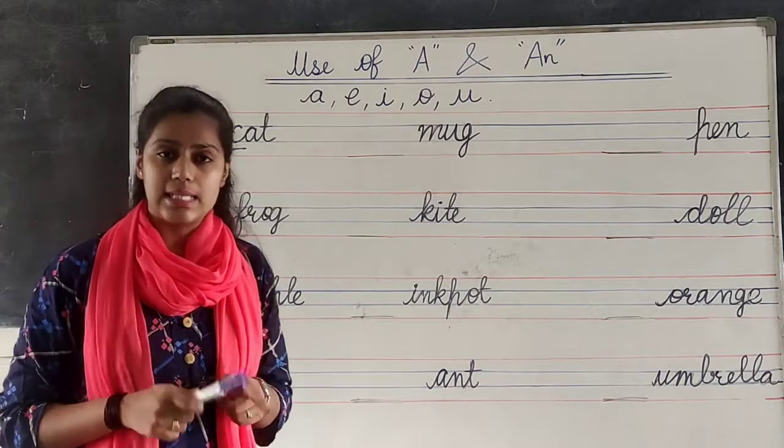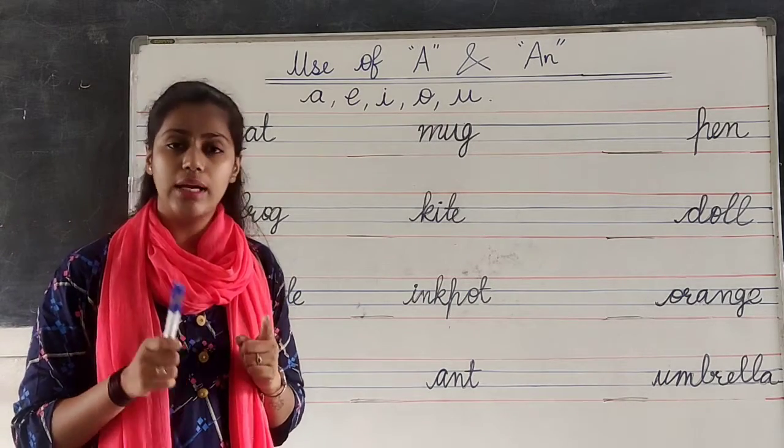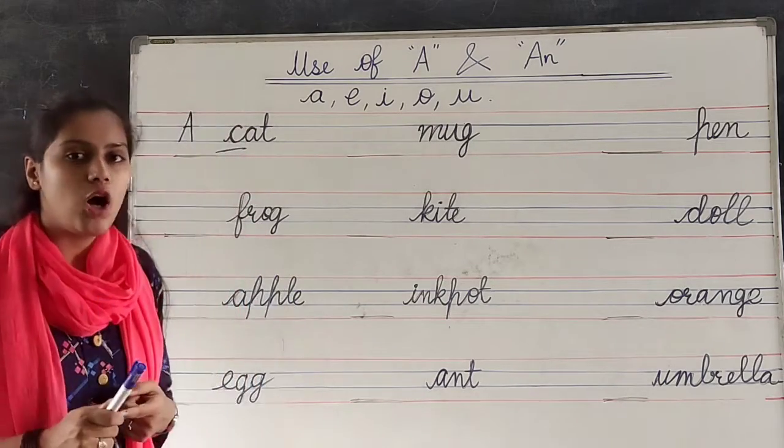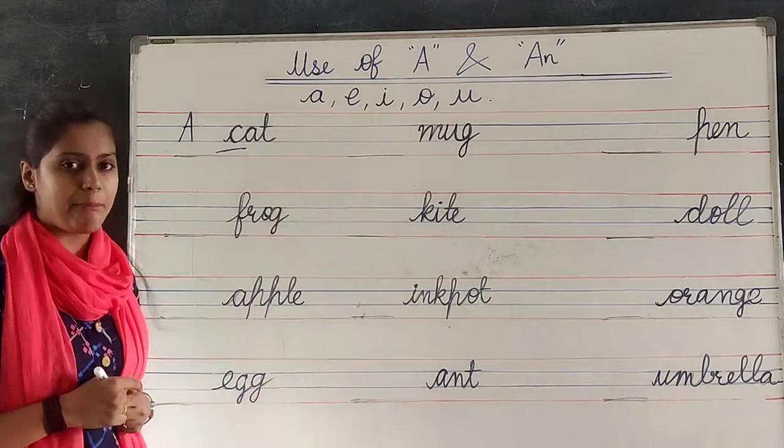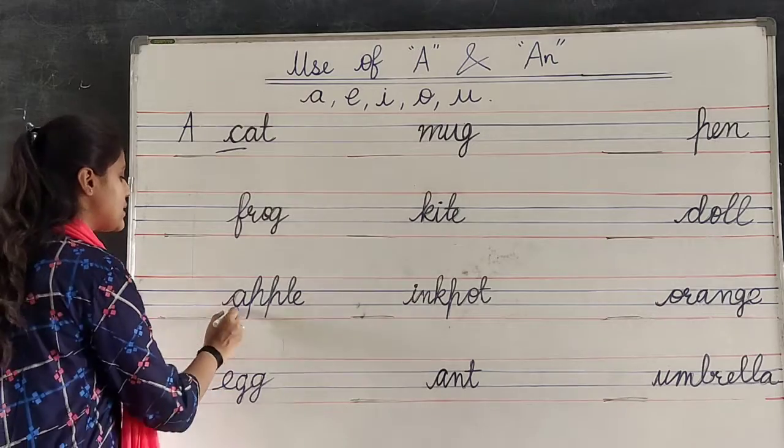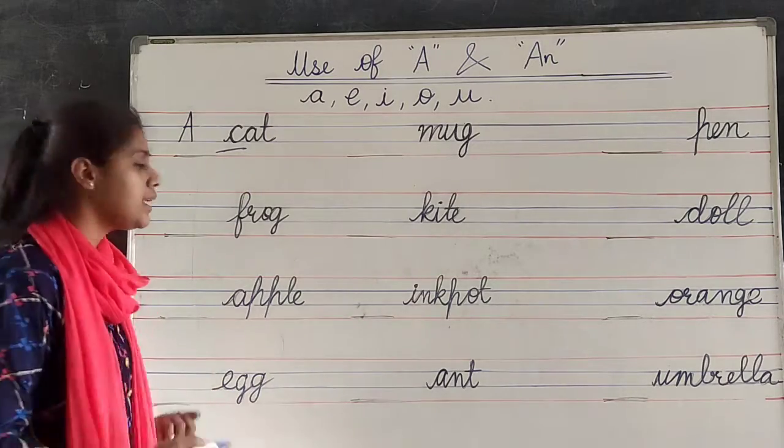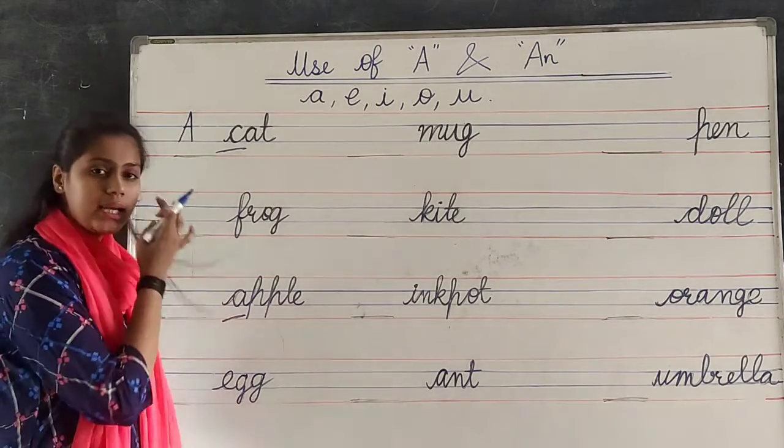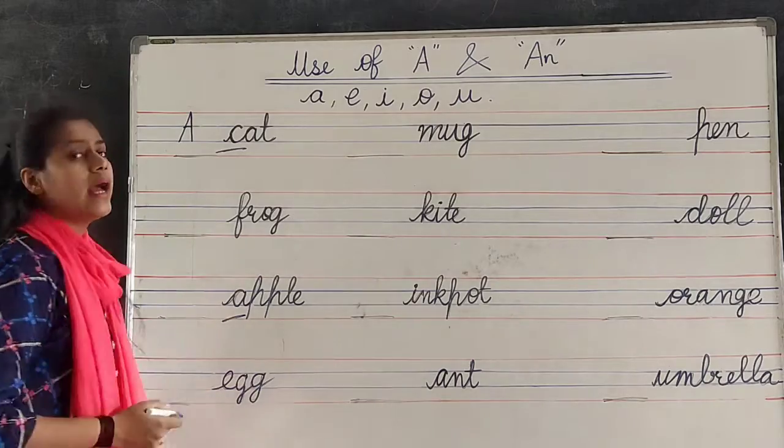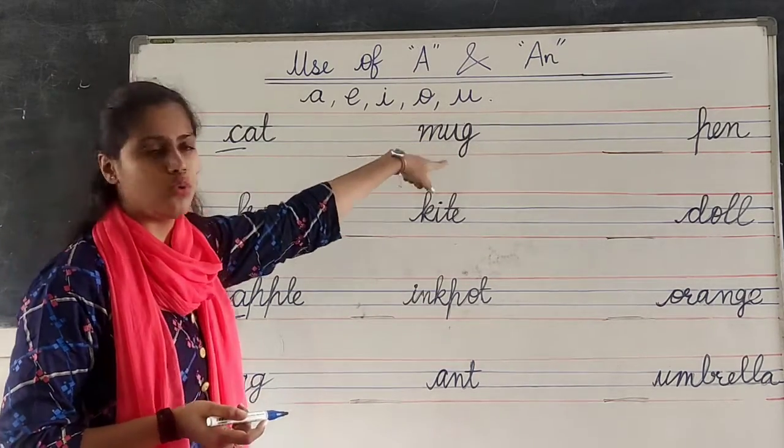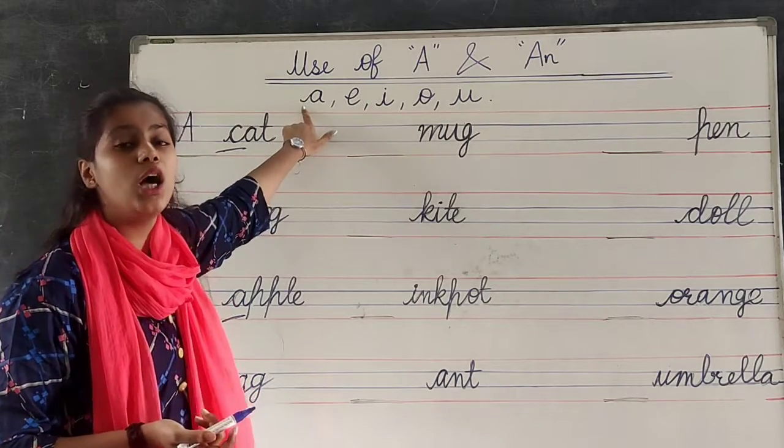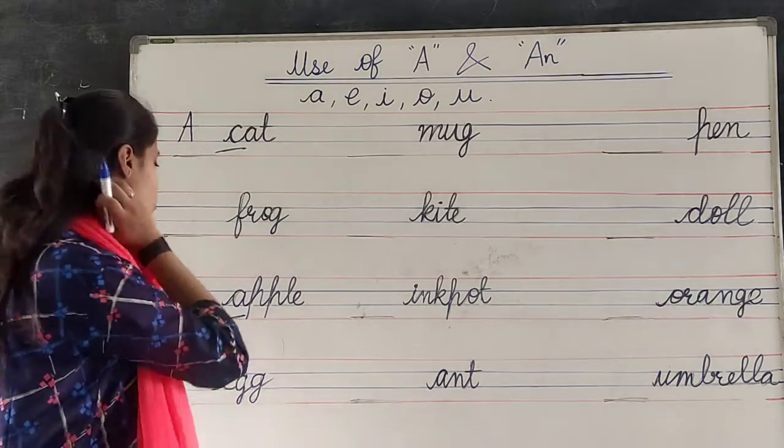And if it is starting from vowel, like apple. In apple, first letter is A. What is it? A. Right? So, A is a vowel. A, E, I, O, U. A is a vowel. Right?